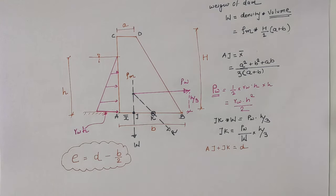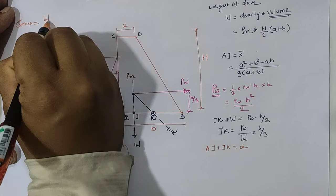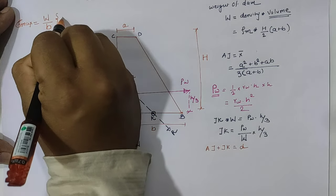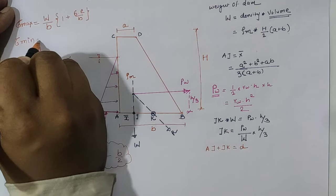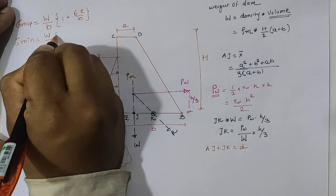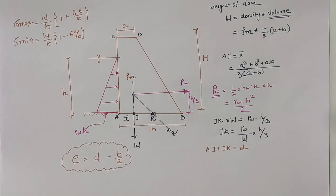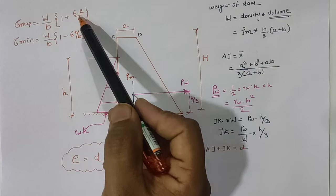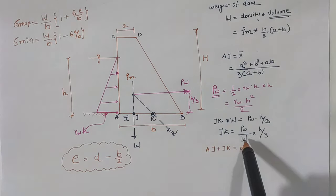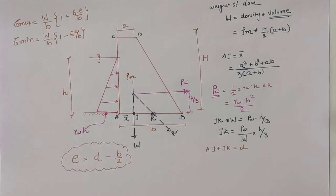For the stress generated on the dam section, the maximum stress is calculated as σ_max = (W/b) × (1 + 6e/b), and the minimum stress is σ_min = (W/b) × (1 − 6e/b). Weight W is calculated by density × area, eccentricity e = d − b/2, and base width b is given in the example data. These are the calculation steps for stresses in a dam section.